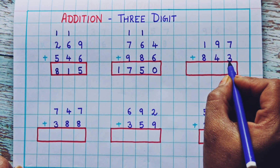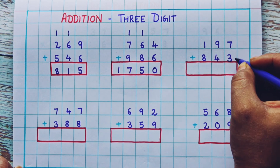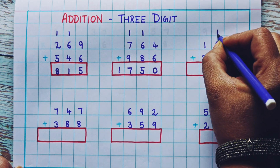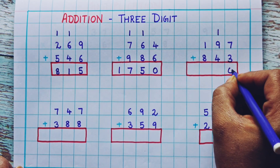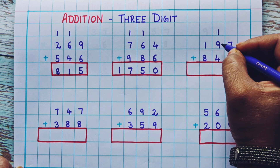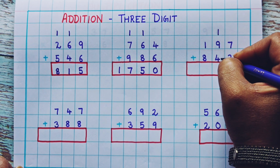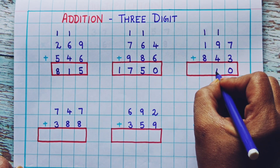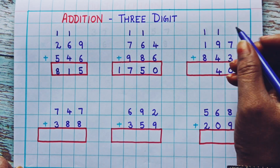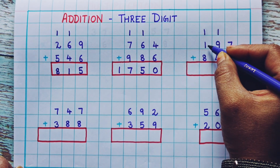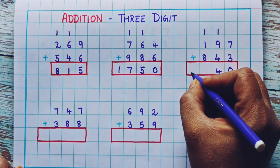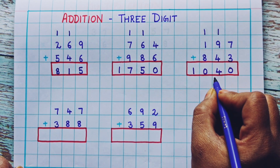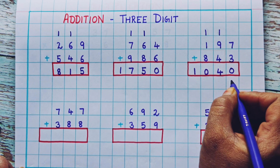Now let's see the next one: 197 plus 843. 7 plus 3 is 10, so here I'll write 1 as a carryover and 0 at the bottom. Now 1 plus 9 is 10, 10 plus 4 is 14, so 1 I'll write as a carryover and 4 at the bottom. Now 1 plus 1 is 2, 2 plus 8 is 10, so the answer is 1040.